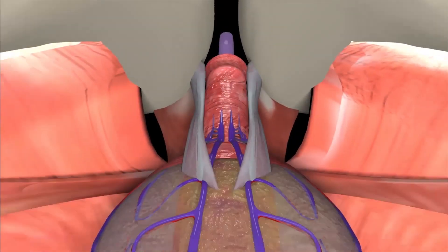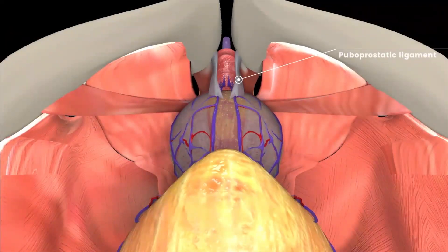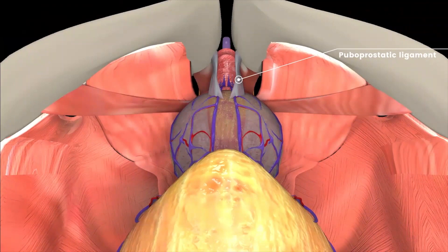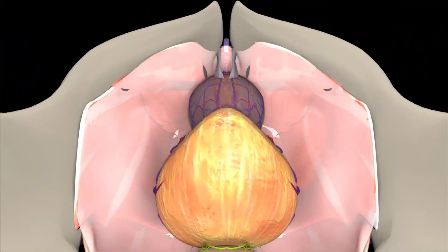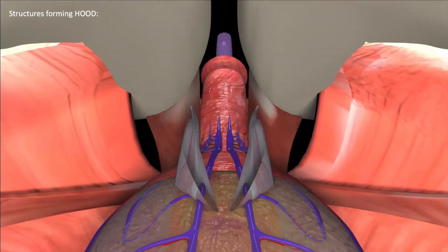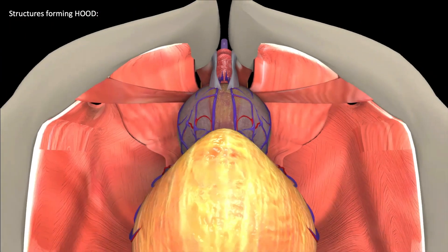The puboprostatic ligaments are the dense pyramid-shaped medial portions of the distal endopelvic fascia. The puboprostatic ligaments fix the bladder, prostate, and membranous urethra to the pubic symphysis. The bilateral ligaments have an added advantage in urogenital competence.